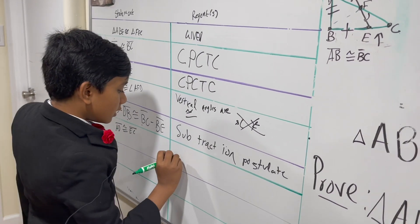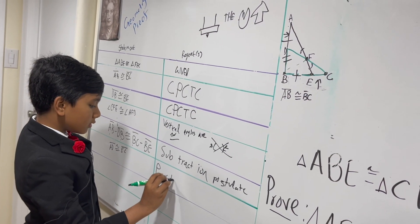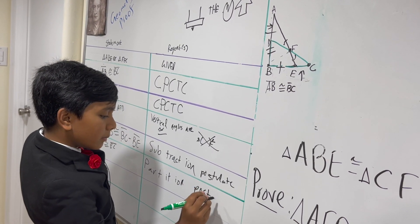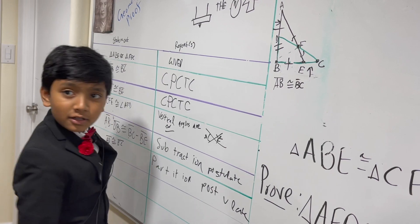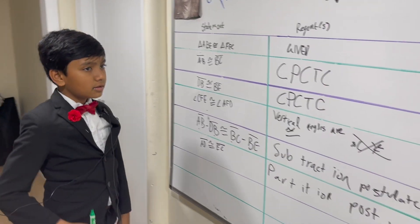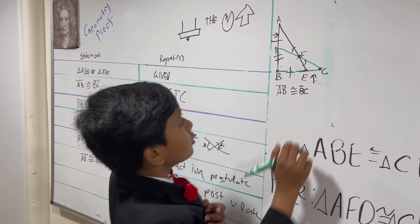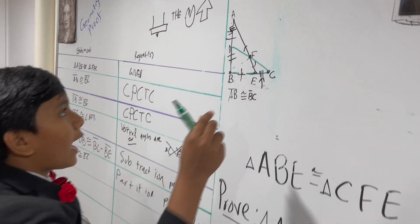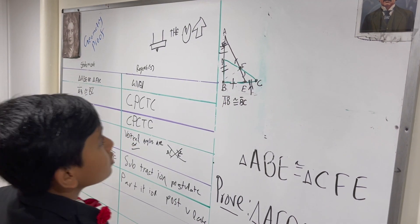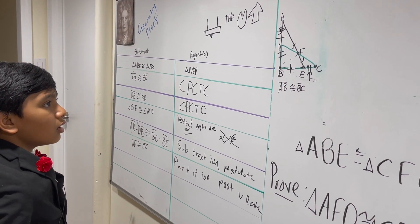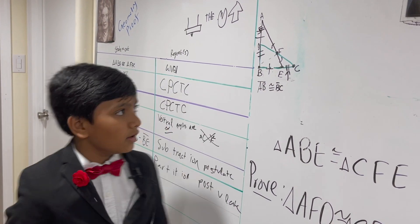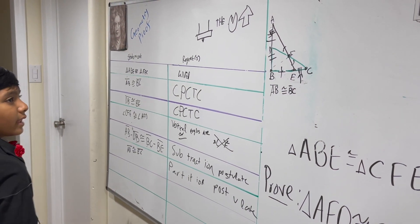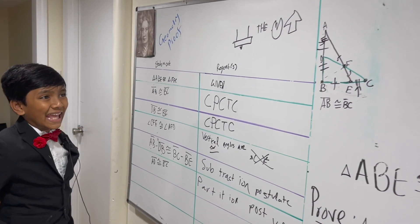This is also called the Partition Postulate. AB minus DB is AD, and BC minus BE is EC. Now we know that these two segments are congruent, which means we have one side and one angle. So what is there left for us to do? We can prove this with angle, angle, side.